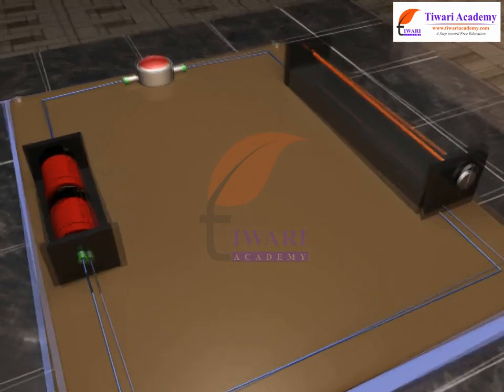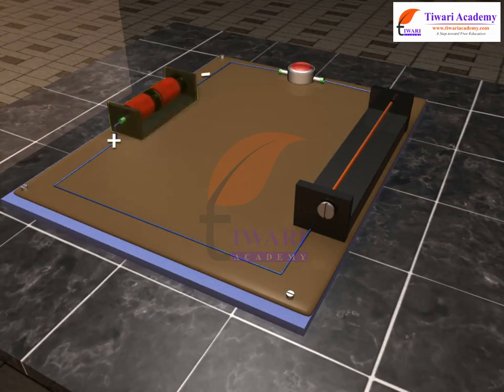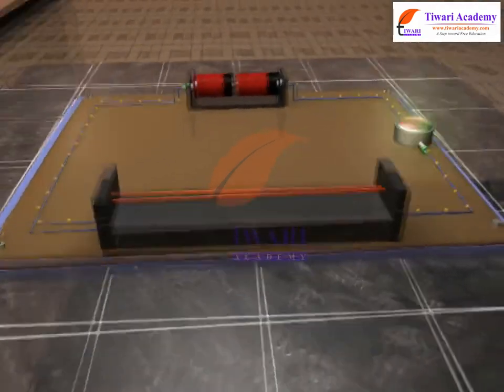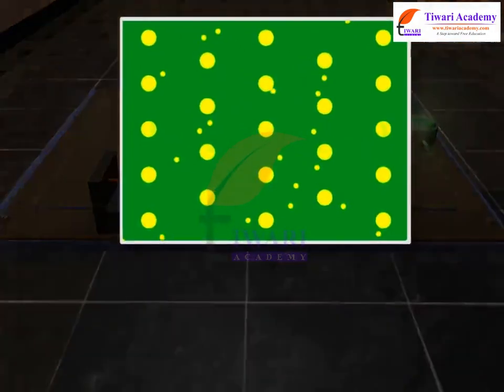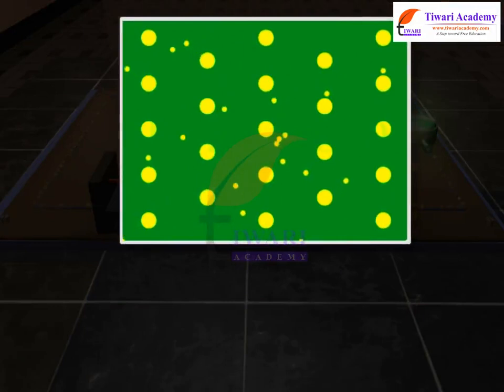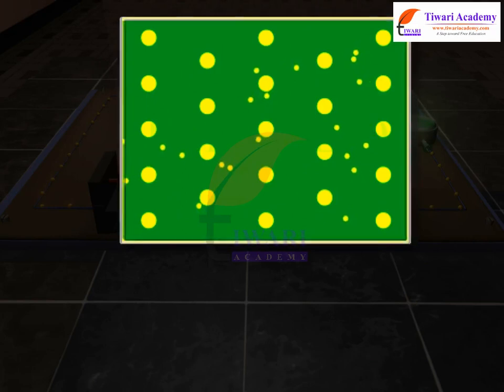When some potential difference is applied across the ends of a conductor, say copper wire, an electrical field is set up inside the conductor, and every free electron will start moving in definite direction opposite to the electrical field, during which they suffer successive collisions against metal ions and lose energy.